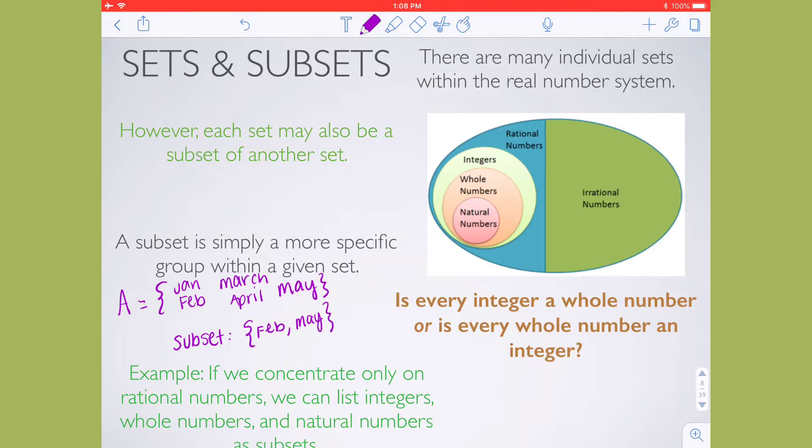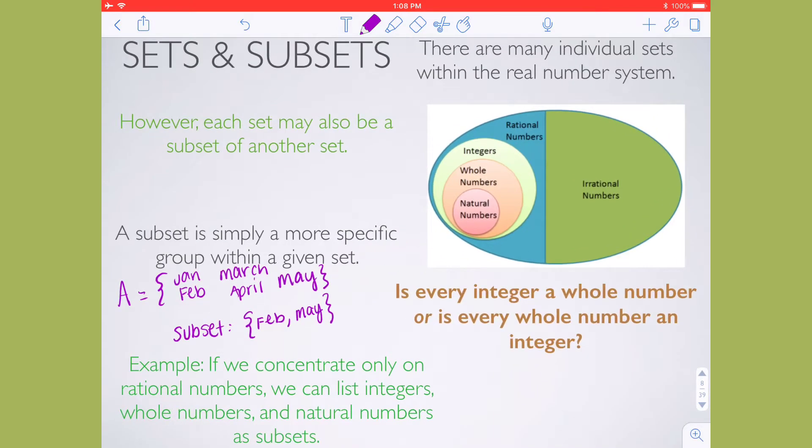If we concentrate on this image for the mathematics side of this, if we look at rational numbers, we can list integers, whole numbers, and natural numbers, all as subsets of a rational number. So I have this question here, is every integer a whole number, or is every whole number an integer? I want you to think about that. And again, I encourage you to pause this video. Is every integer a whole number, or is every whole number an integer? And the answer to this question is...